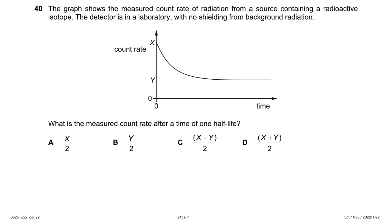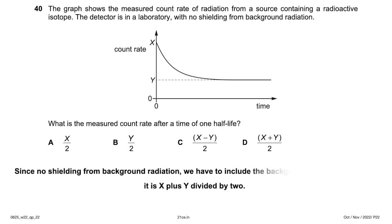A graph shows the measured count rate from a radioactive source in a lab with no shielding from background radiation. What is the measured count rate after one half-life? The background radiation must be included since there is no shielding. If initial measured count is x and background is y, after one half-life the source activity halves, giving (x − y)/2 + y = (x + y)/2. Answer: option D, which is (x + y) ÷ 2.